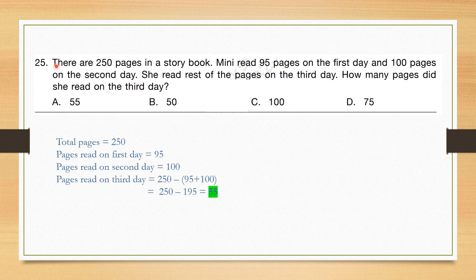Question number 25: There are 250 pages in a storybook. She read 95 pages on the first day and 100 pages on the second day, and the rest on the third day. Remaining pages = 250 minus 95 minus 100, which is 55. She read 55 pages on the last day. Correct answer is option A.